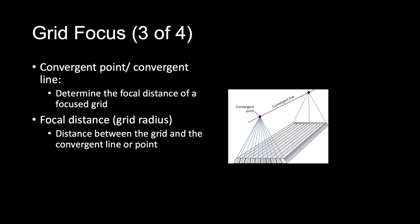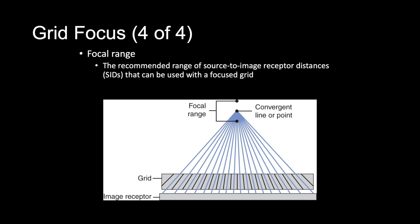If imaginary lines were drawn from each of the lead lines in a linear focused grid, these lines would meet to form an imaginary point called the convergent point. The line from point to point is called the convergent line. Both the convergent line and convergent points determine the focal distance of the focused grid. The focal distance, sometimes referred to as the grid radius, is the distance between the grid and the convergent line or point, and is used to determine the focal range of a focused grid. The focal range is the recommended range of SIDs that can be used with a focused grid.